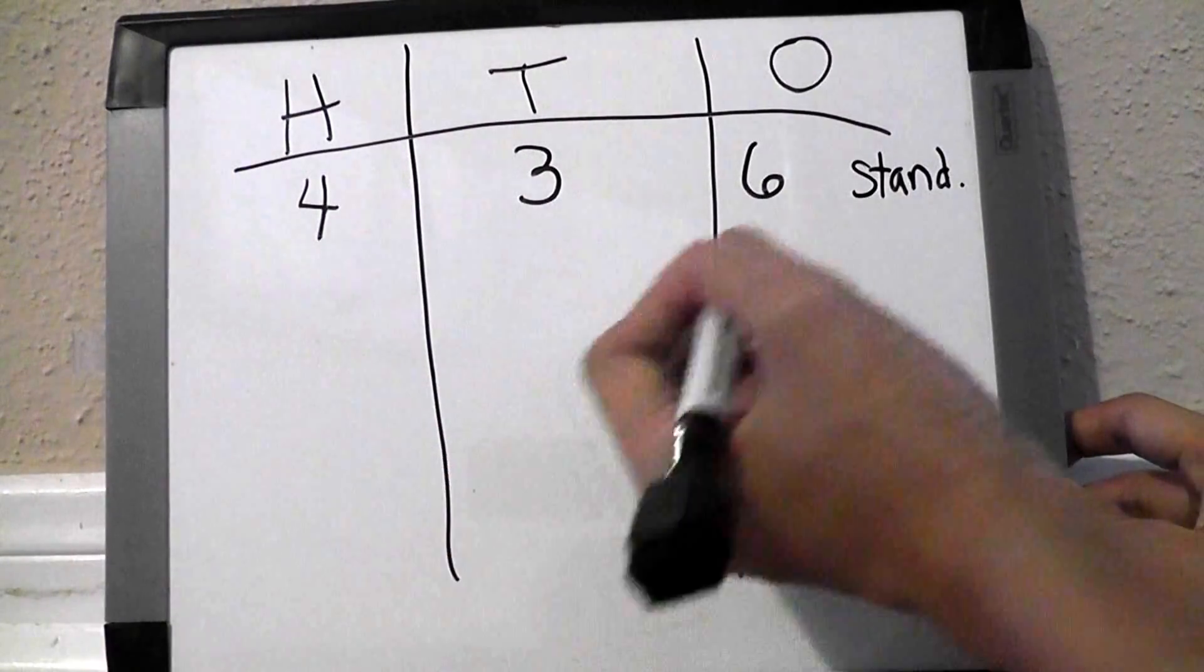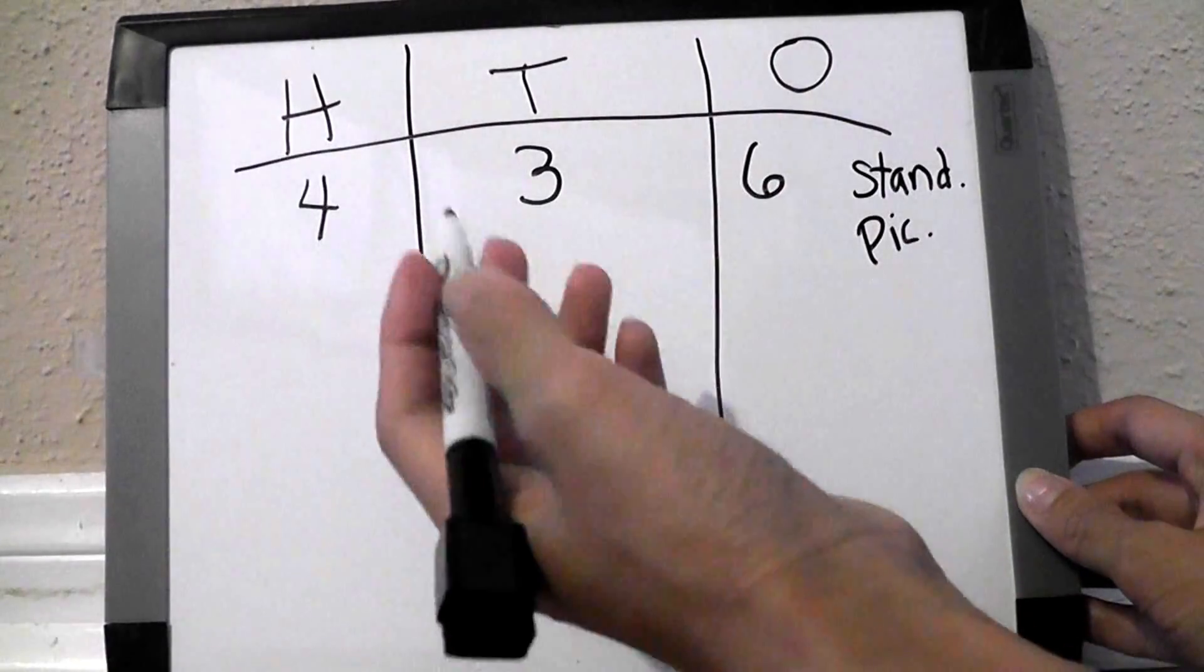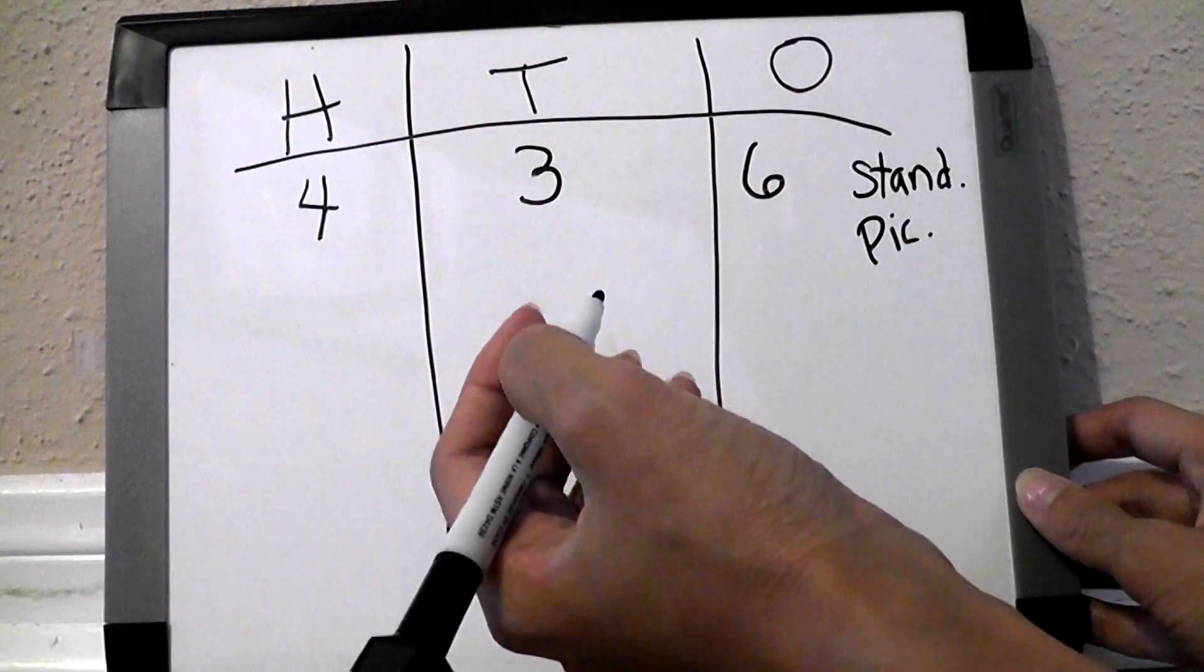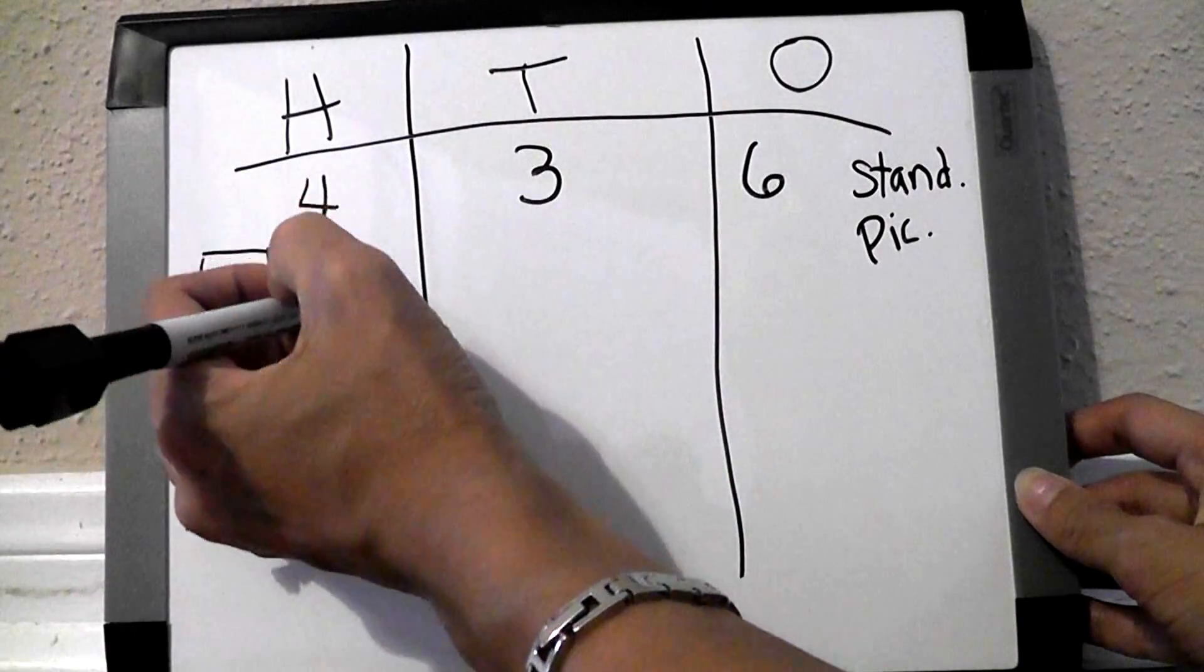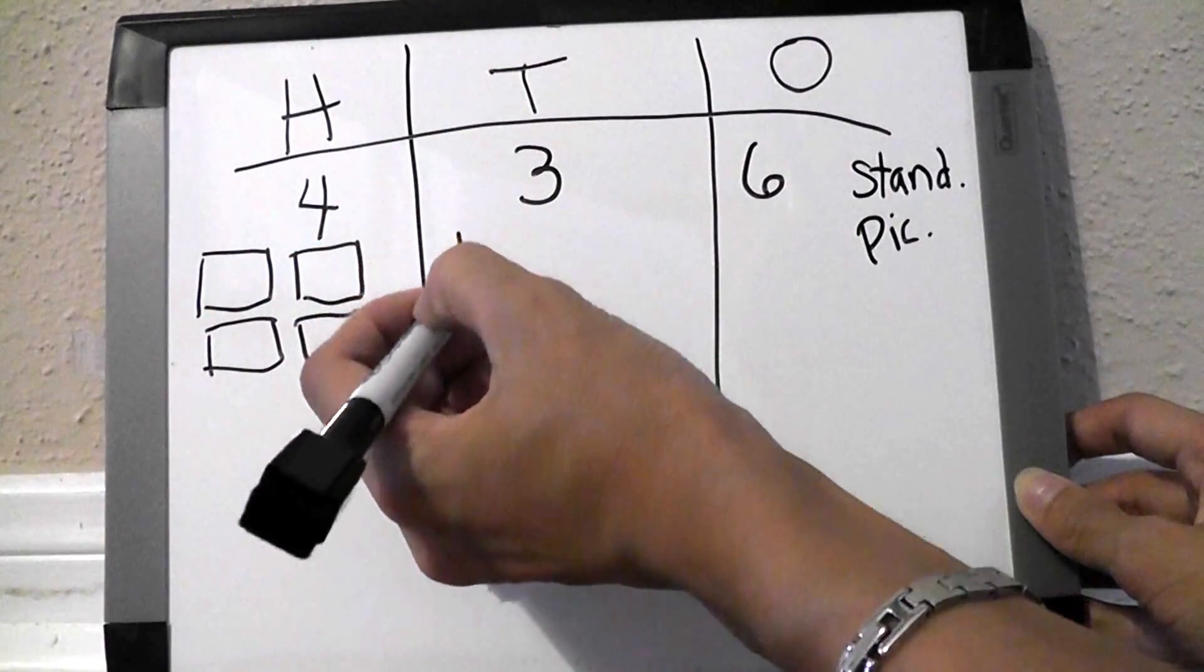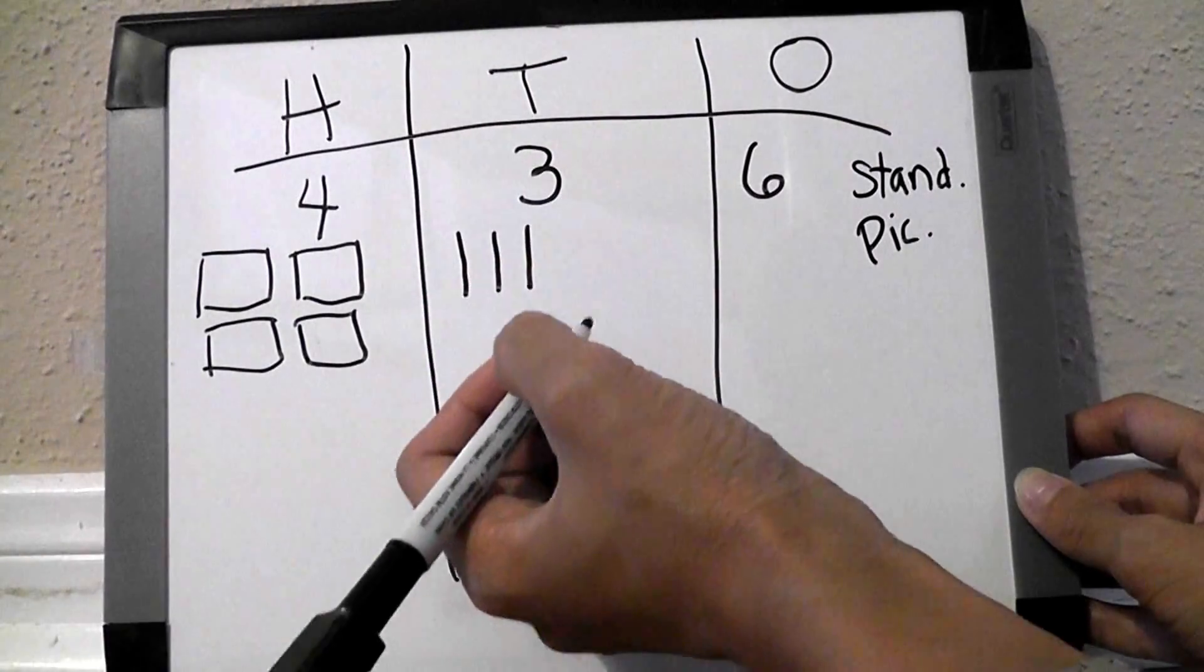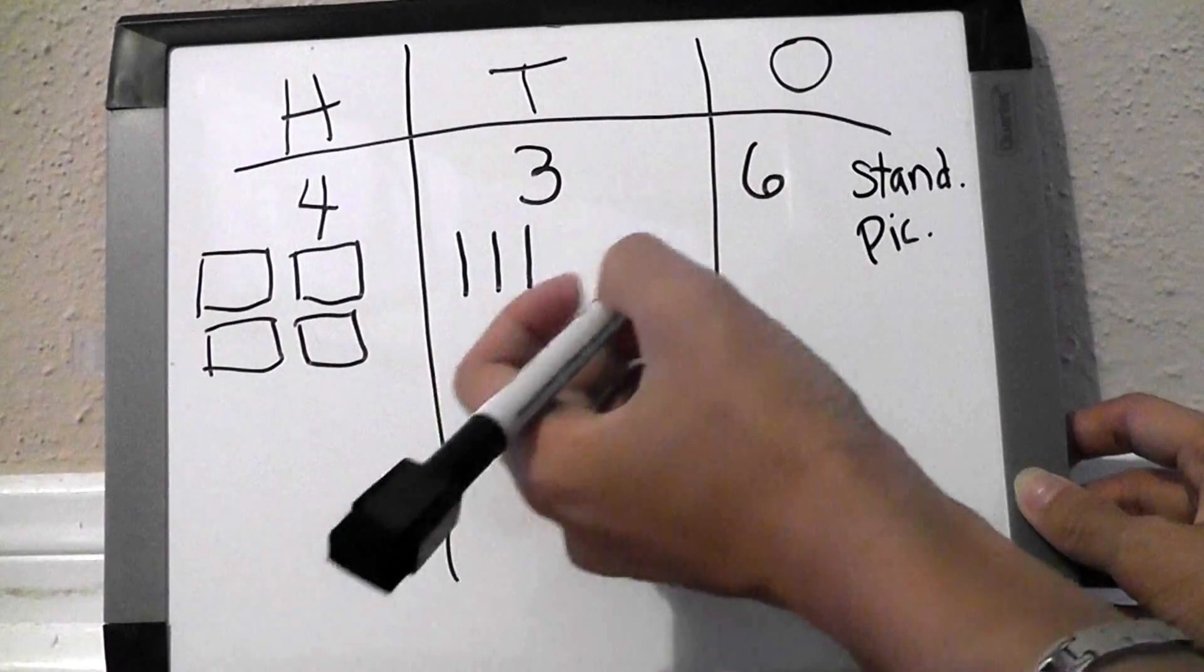The next way a student would be asked would be in the picture form. And to model this number in a picture form, we would use blocks. The hundreds look like big squares, so since there are four of them, we will have four hundreds. Our tens are represented in rods, which are like sticks, so there goes three tens. And our ones are tiny little cubes, which students can draw as little squares or just dots.